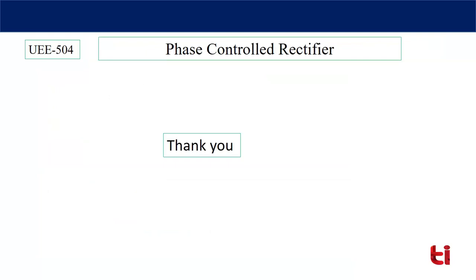Today I have discussed about continuous and discontinuous modes of operation of a single-phase full wave converter with RLE load. We have seen that by changing the firing angle α or by changing the load impedance, we can shift the converter between continuous and discontinuous modes of operation. These modes are important for closed-loop control systems. We have also found the RMS and average current through each SCR, as well as the RMS and average output current of the complete converter. Thank you.